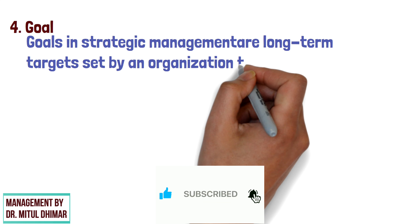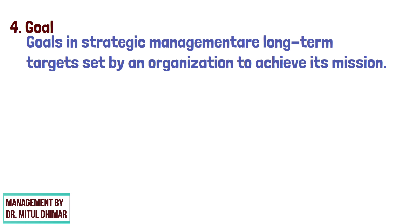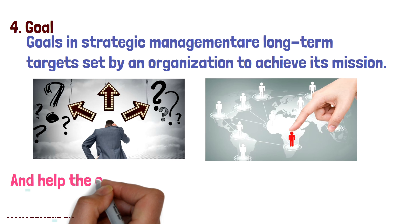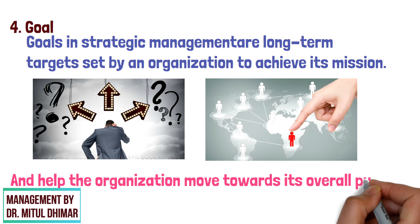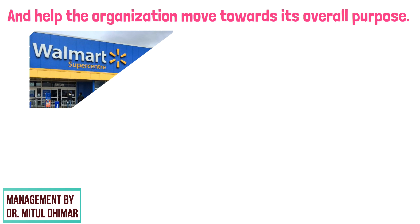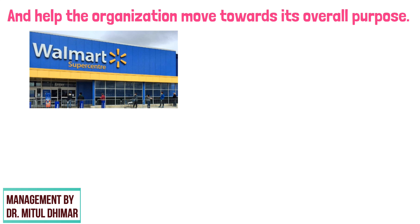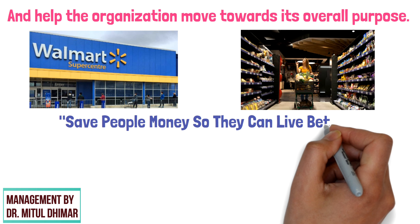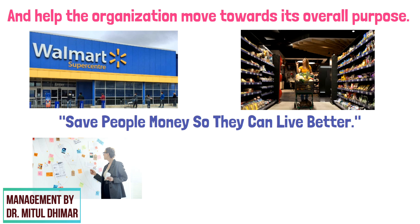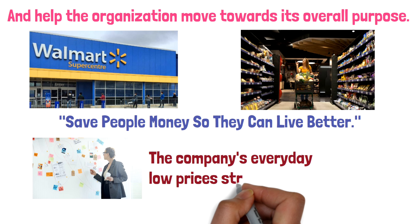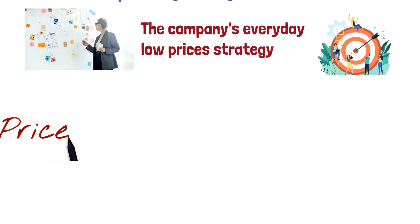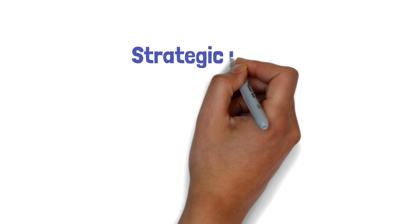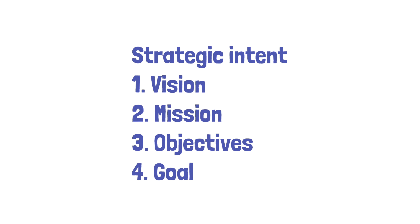Four: Goals. Goals in strategic management are long-term targets set by an organization to achieve its mission. They provide a framework for decision making and resource allocation, and help the organization move towards its overall purpose. A well-known example is Walmart — the retail giant has a goal to save people's money so they can live better. This is evident in the company's everyday low prices strategy, which aims to offer products at the lowest prices possible to help customers save money.